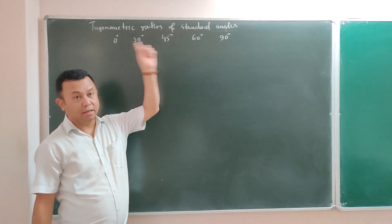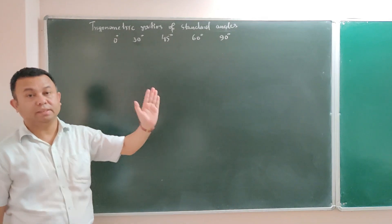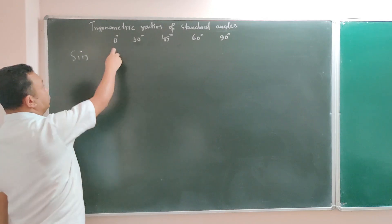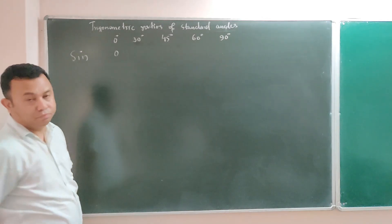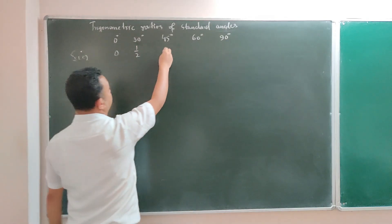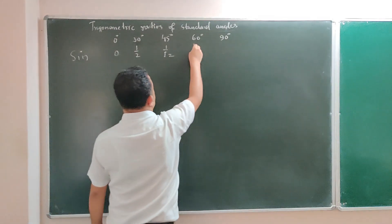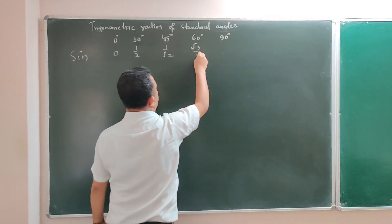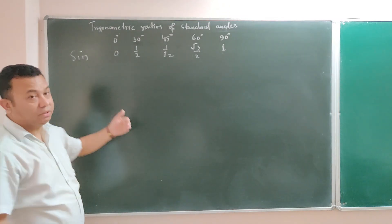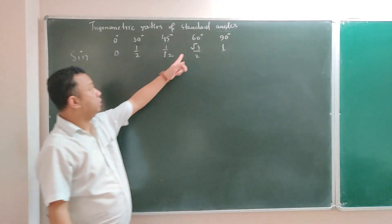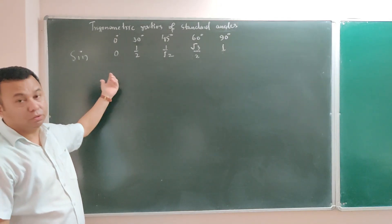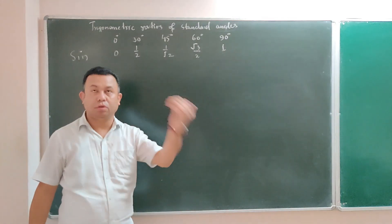The standard angles are 0, 30, 45, 60, and 90. The value of sin 0° is 0, sin 30° is 1/2, sin 45° is 1/√2, sin 60° is √3/2, and sin 90° is 1. So if somebody asks you what is sin 60°, immediately you should know it is √3/2. Sin 45° is 1/√2, sin 90° is 1, sin 0° is 0, sin 30° is 1/2. This is what should be in your mind.